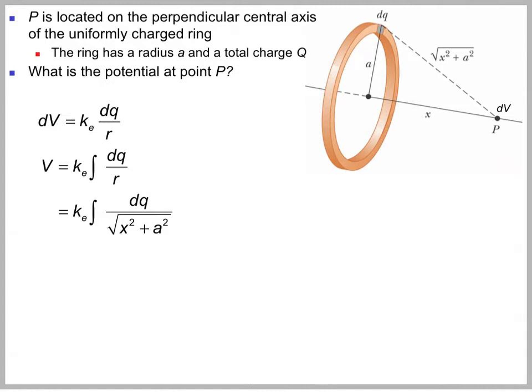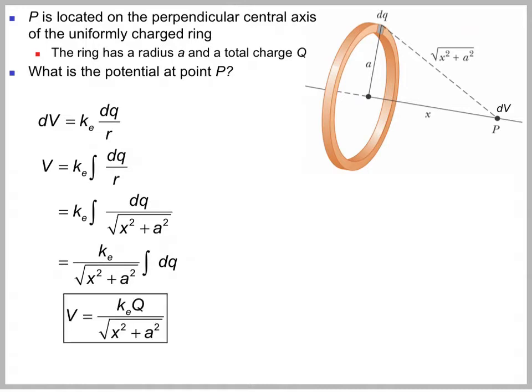As we integrate all the way around the ring, we notice that x squared and a squared are constant, so they come out of the integral. Then we're just integrating dq, which is the total charge on the ring. So the potential is kQ over the square root of x squared plus a squared.